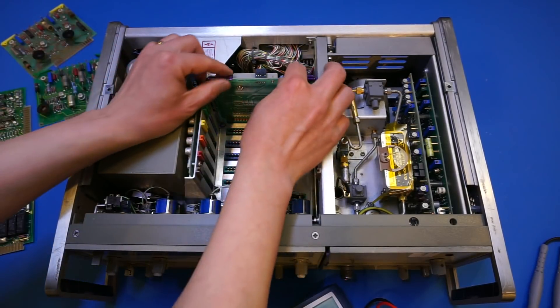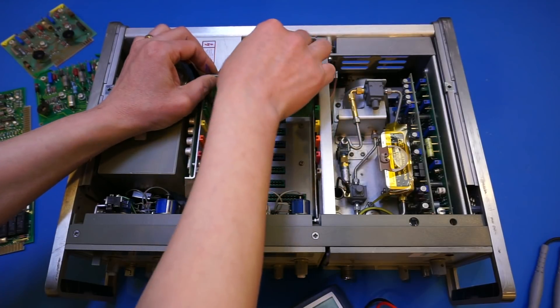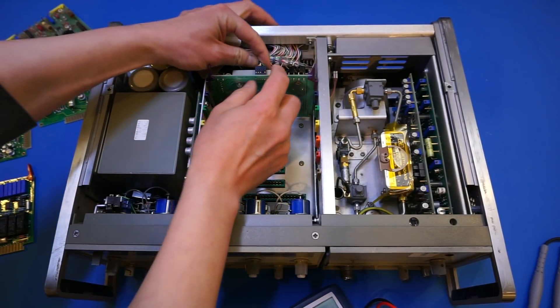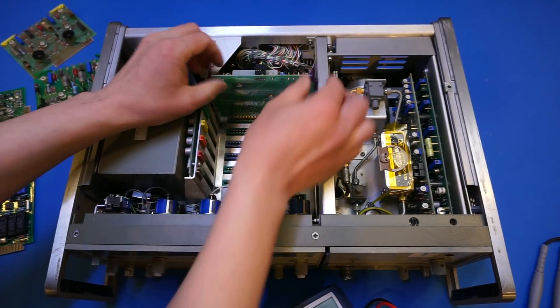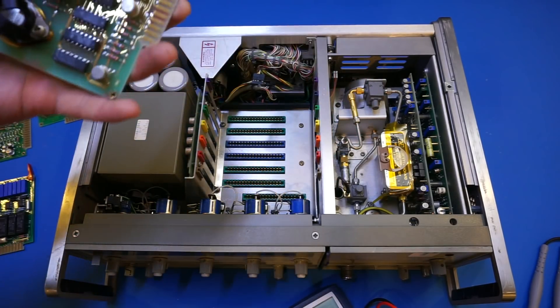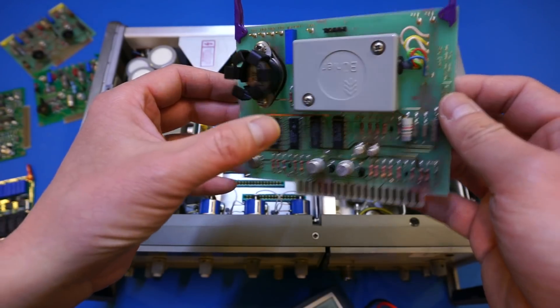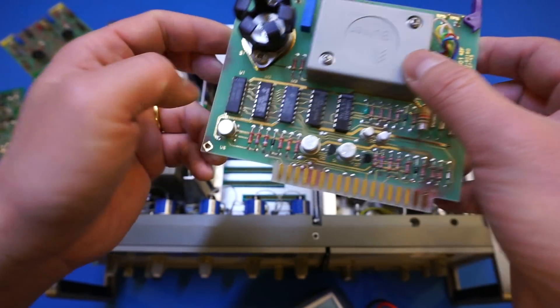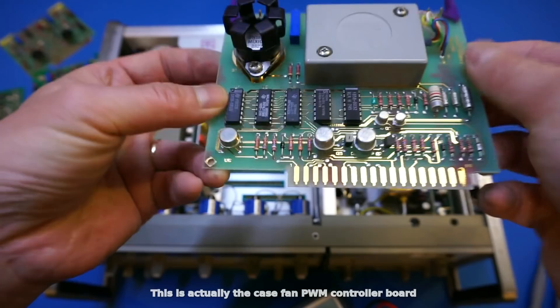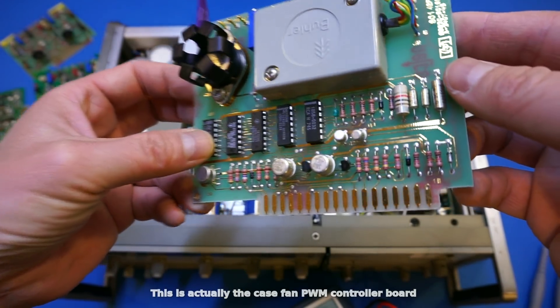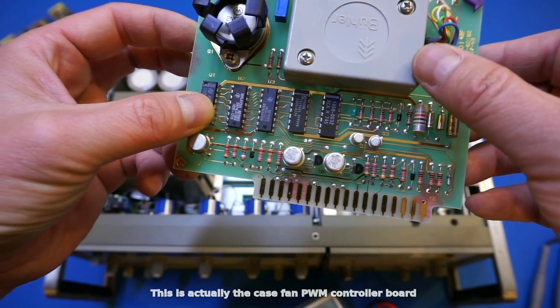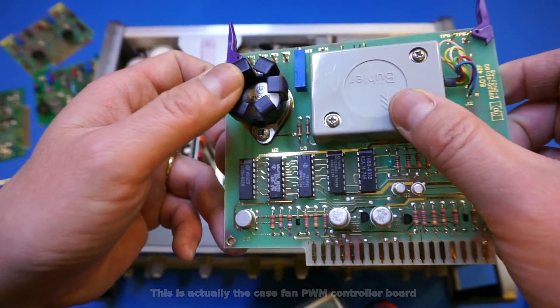So now we have another control board here. And let's take a look. This one does have a connector here. So let me remove that first before I can take out. And this one, I'm actually not sure what this one is. I probably should just check the manual,